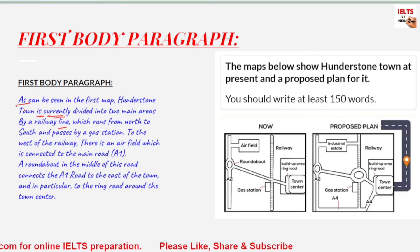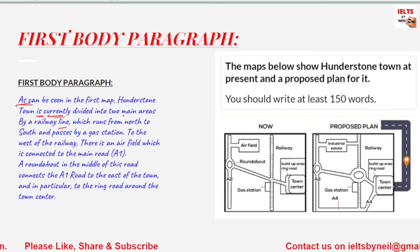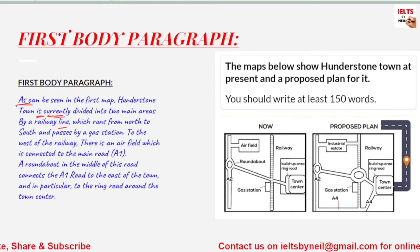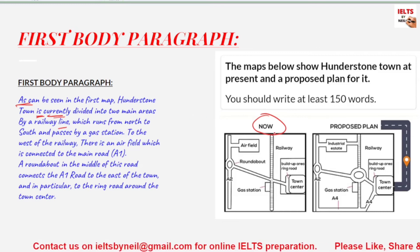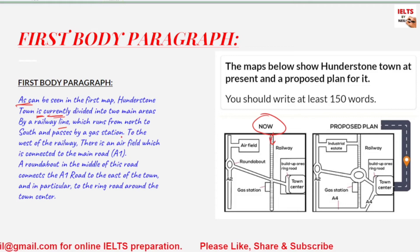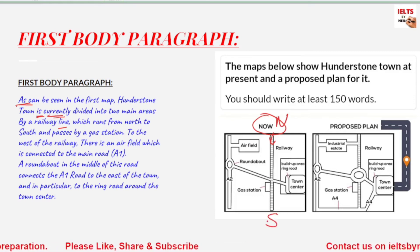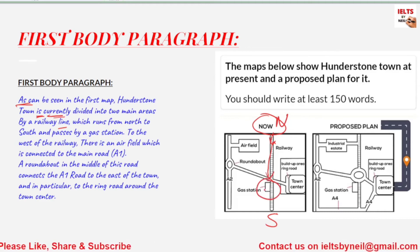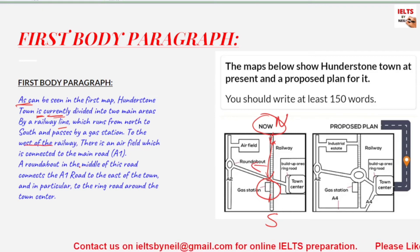Moving on to the first body paragraph. It says: 'As can be seen in the first map, Hunderstone town is currently divided into two main areas' — 'is' and 'currently' confirm we're using the present tense, because they're talking about right now. It is divided by a railway line, which runs from north to south and passes by a gas station. To the west of the railway there is an airfield which is connected to the main road.